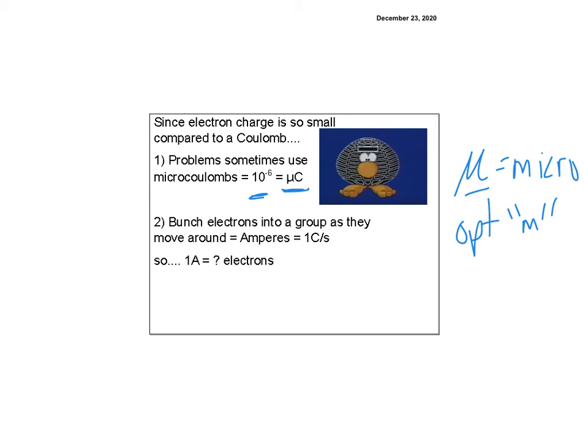But usually what we do is we bunch them all together and call it an amp. So you may have heard of amperes or amps, and you know, how many amps are you pulling? So they basically took a bunch of these electrons and stuck them together. And said, okay, here is an amp. So the question is, how many electrons does it take to make one amp?